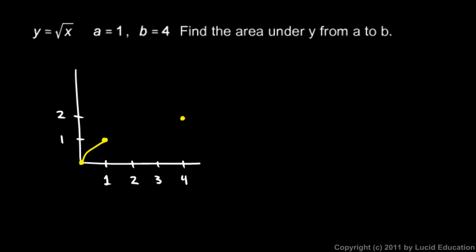So it will look something like this. It's a square root curve. And we're told to find the area under the graph from a to b. So that's from 1 to 4. So that's the area that we're looking for.